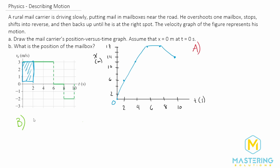There are two ways to do that. The first one is we just made the position versus time graph. The question says the mailman overshoots, shifts into reverse, then backs up until he is right at the mailbox. He ends at 10 seconds, and the position there is 14 meters.